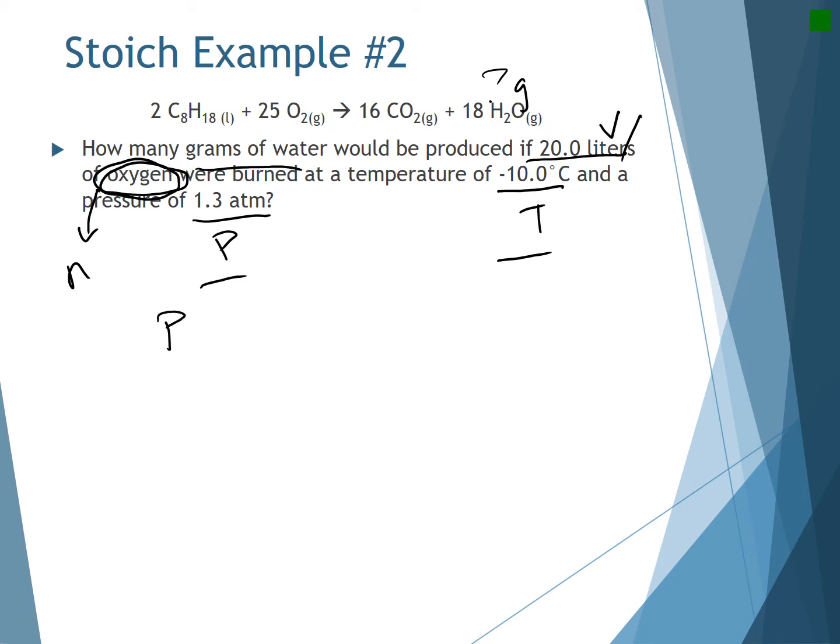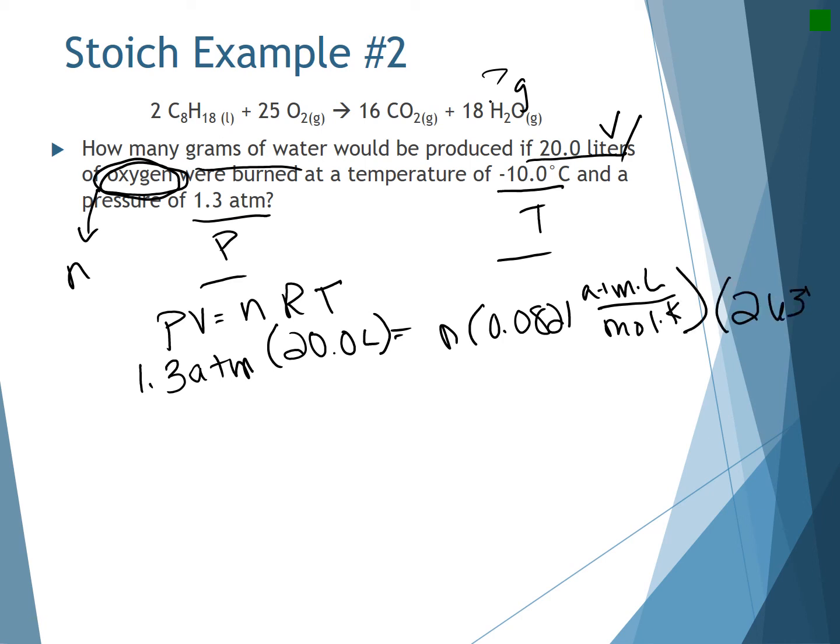So I'm going to use PV equals NRT. In this case, pressure is 1.3 atm. My volume is given to me, so it's 20.0 liters. That is equal to my N times my R, which is 0.0821 atm times liters per mole kelvin. And then that is times my T, which is 263 kelvin.